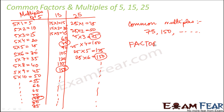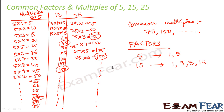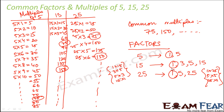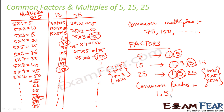Now for the factors: 5 has just two factors, 1 and 5. For 15, the factors are 1, 3, 5, and 15, because 15 can be written as 1×15, 3×5, 5×3, and 15×1. For 25, the factors are 1, 5, and 25, because 25 can be written as 1×25, 5×5, and 25×1. The common factors between 5, 15, and 25 are 1 and 5. In this way we can find common factors and multiples between 2 or more numbers.